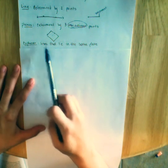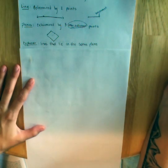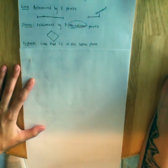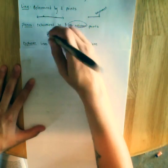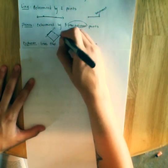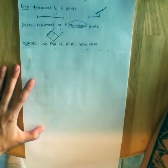Coplanar, lines that lie in the same plane. That one's a little more self-explanatory. Coplanar in this example could be this line and this line. That would be coplanar.